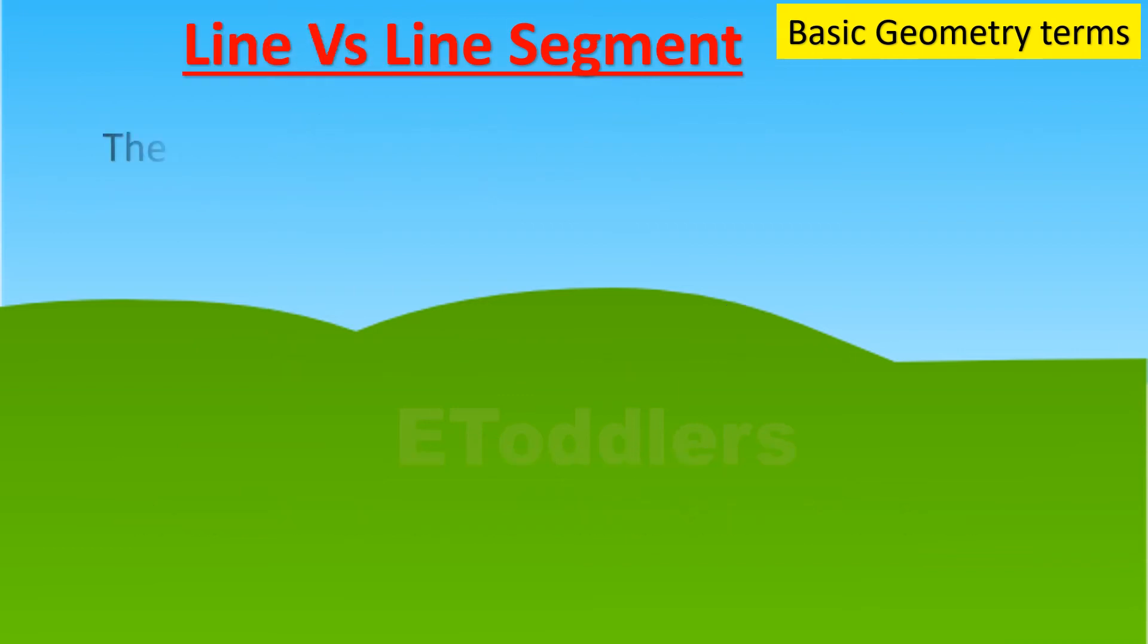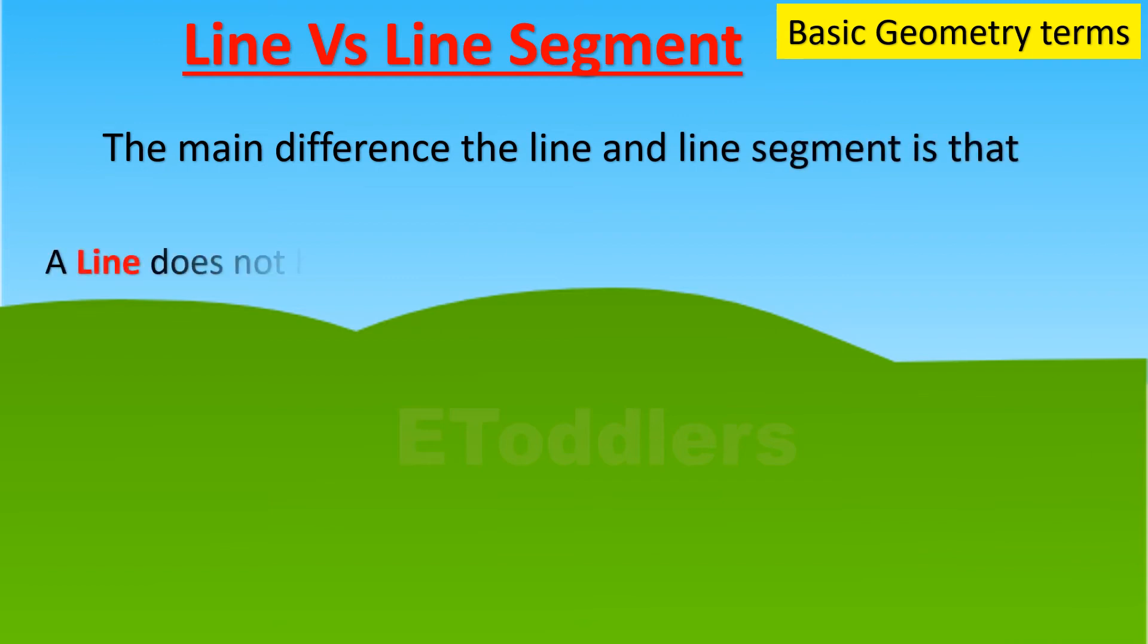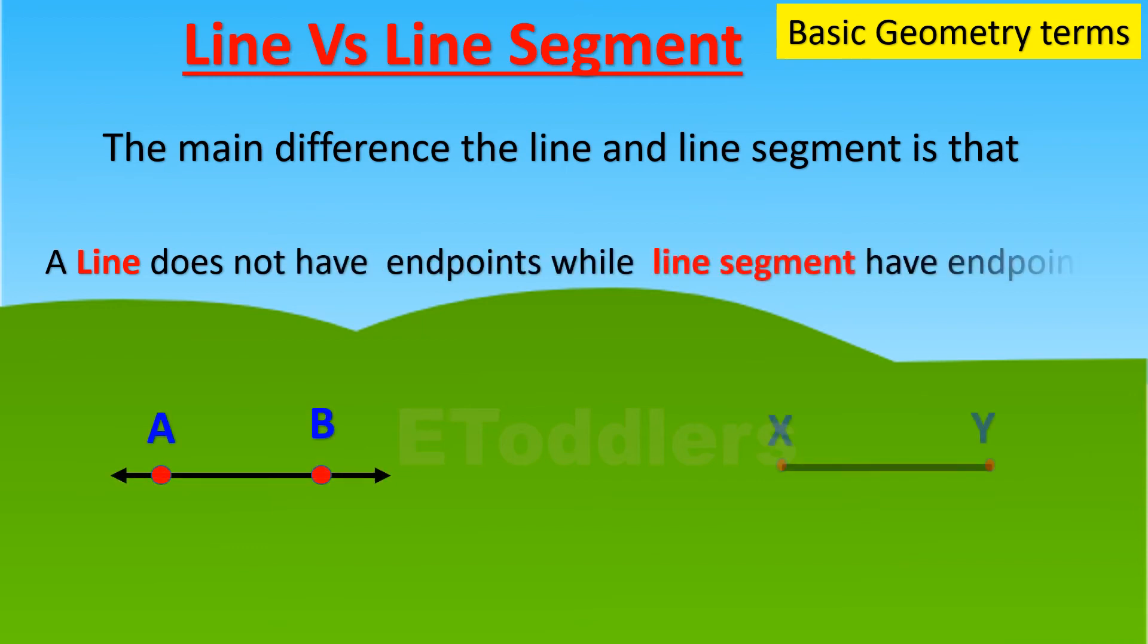The main difference between the line and line segment is that a line does not have endpoints, while a line segment has endpoints.